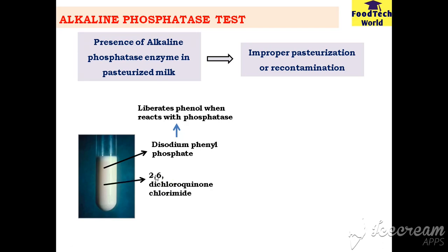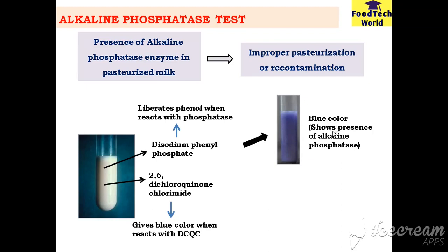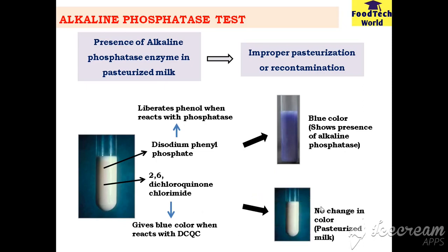We then add 2,6-dichloroquinone chloramide, which acts as an indicator. The liberated phenol reacts with this indicator and gives a blue color. The blue color represents the presence of alkaline phosphatase enzyme in the milk. If the milk is properly pasteurized, there is no alkaline phosphatase enzyme, so there is no liberation of phenols and no formation of blue color — no change in color — indicating the milk is properly pasteurized.